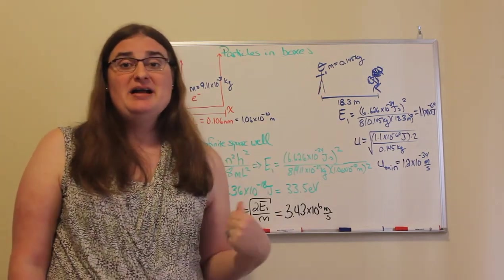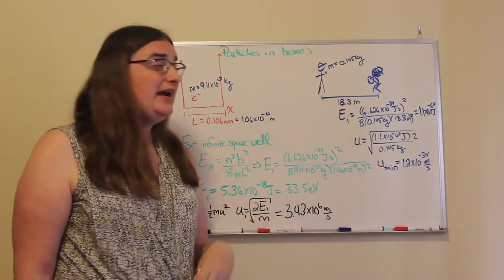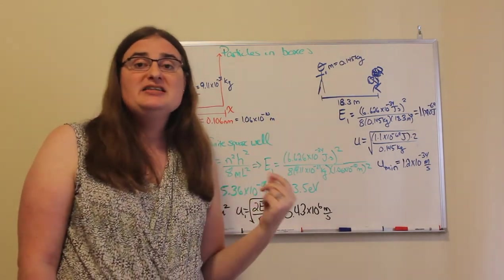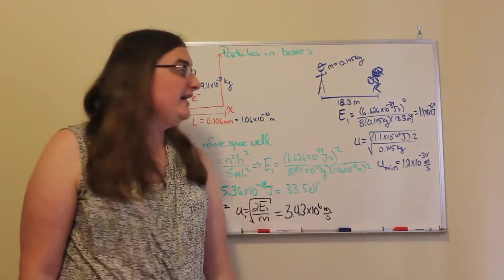So a baseball has a mass of 0.145 kilograms, and a pitcher and catcher are usually about 18.3 meters away from each other on a baseball diamond.